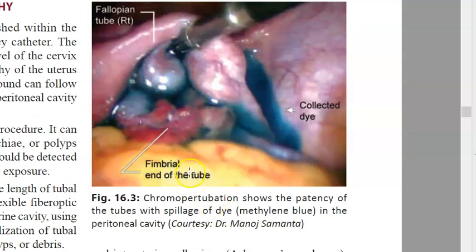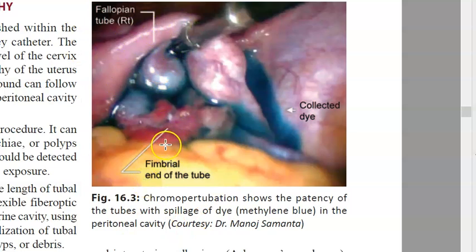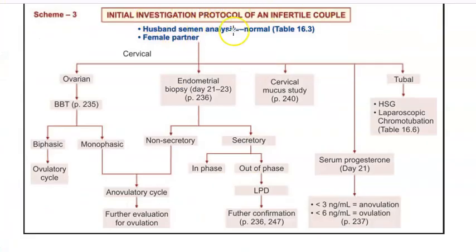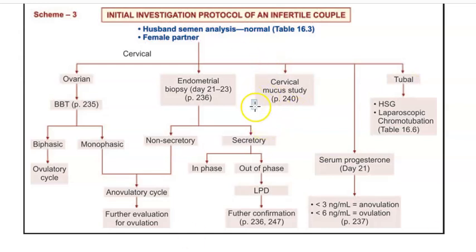Here you can see that chromotubation has been done - checking tubal patency with dye spillage. The fallopian tube is marked and at the fimbrial end the dye has gone through the tube to the peritoneal cavity using methylene blue dye. So in summary, for the infertile female: check the ovary via basal body temperature, endometrial biopsy, cervical mucus study, progesterone, LH, estrogen, then HSG and laparoscopy.